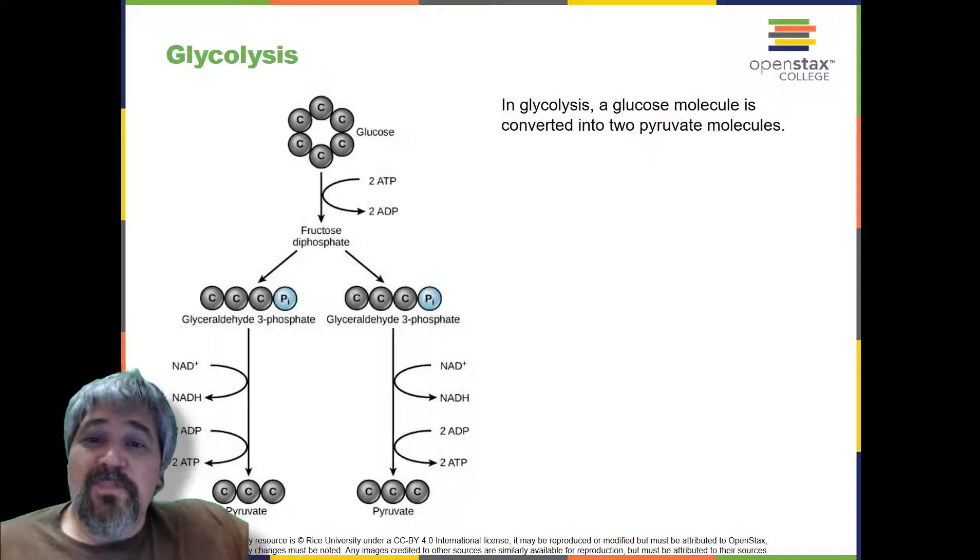Glycolysis begins with the six-carbon ring-shaped structure of a single glucose molecule and ends with two molecules of a three-carbon sugar called pyruvate.